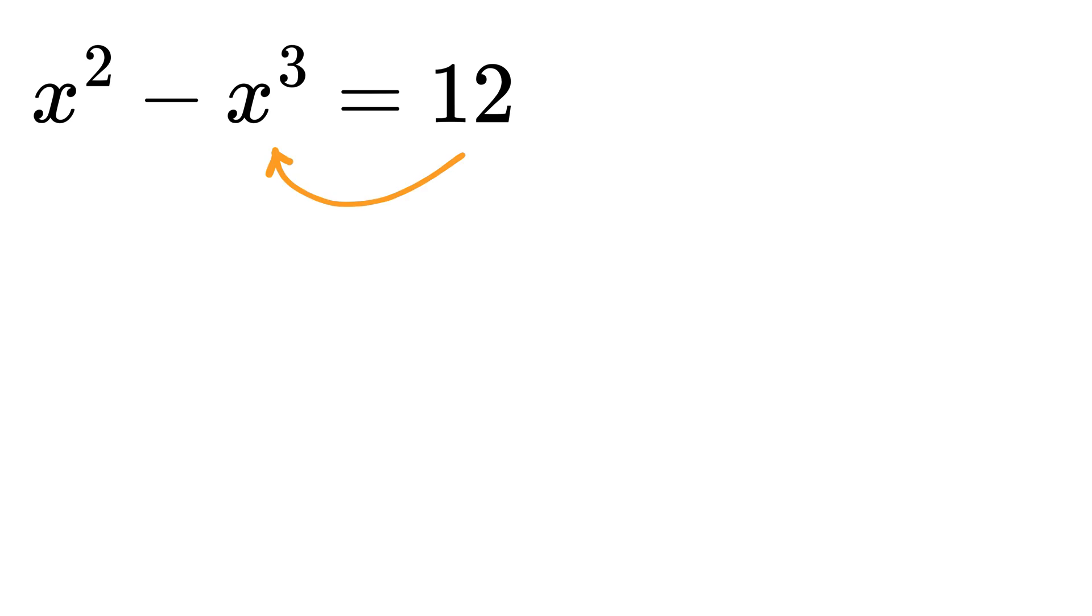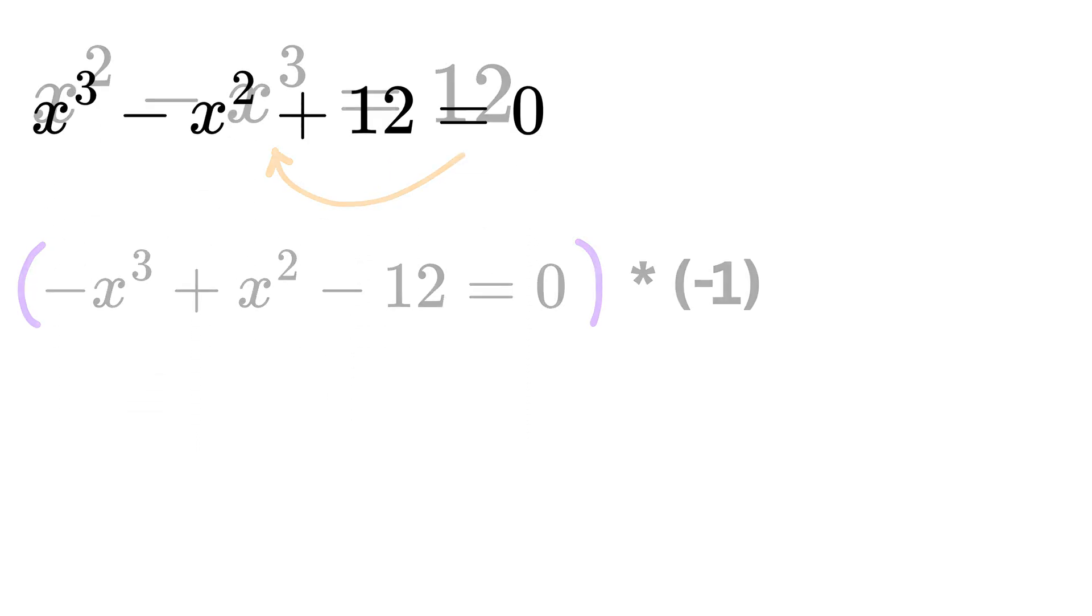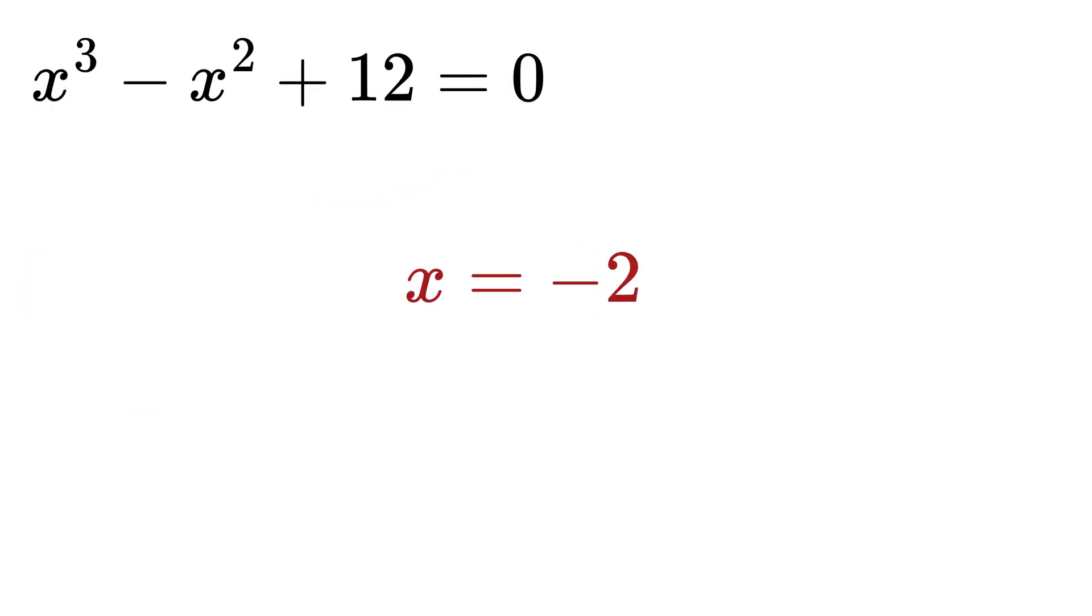For that, first take this 12 on the left-hand side and rearrange this equation to make it minus x cubed plus x squared minus 12 equals 0. Or, multiply both sides by minus 1 to get x cubed minus x squared plus 12 equals 0. Now, because one of the roots is negative 2, we will factorize it using x plus 2.